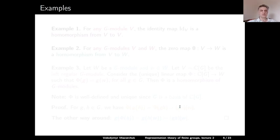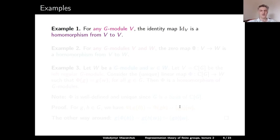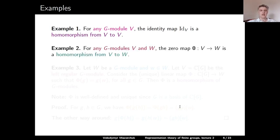Here are some examples. For any G-module V, the identity map on V is a homomorphism from V to V — this is fairly obvious. Example 2: for any G-modules V and W, the zero map, which sends all elements in V to the zero vector in W, is a homomorphism from V to W.